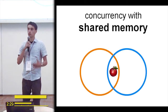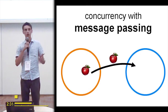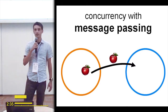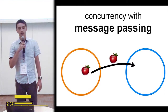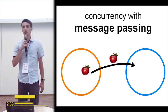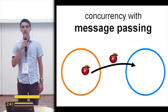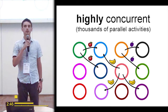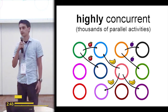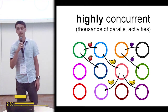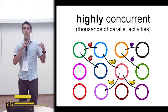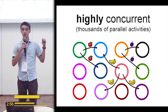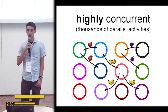So instead of sharing the same information, we clone it — we copy it and pass it to each process. Then everybody's happy. This is how applications will look: thousands or hundreds of thousands of parallel activities sharing information by copying. This will scale — meaning you can get more power as long as your application is designed this way.